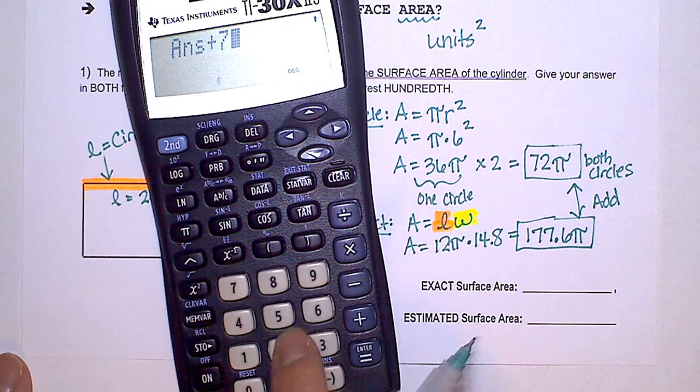We want to add these two amounts because this is the area of both circles. This is the area of the rectangle. We want to add them both in 177.6 plus 72.